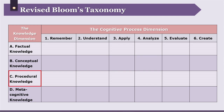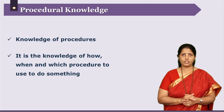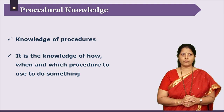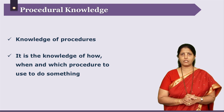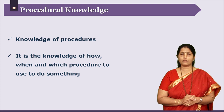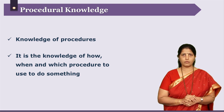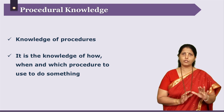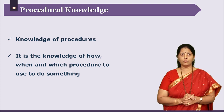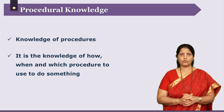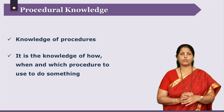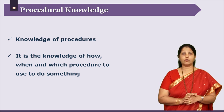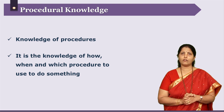Now let us take a look at the next category of knowledge dimension: procedural knowledge. Procedural knowledge is the knowledge about how, when, and which procedure to follow. Students learn different kinds of procedures — be it scientific procedures like solving physics problems or mathematical problems. While solving numerical problems, students generally know which procedure to follow and how to solve a certain equation or problem. This knowledge about how to follow a procedure falls in the category of procedural knowledge.